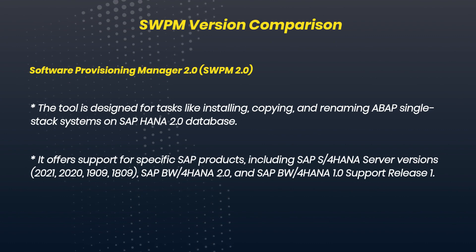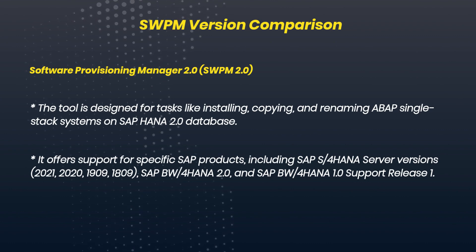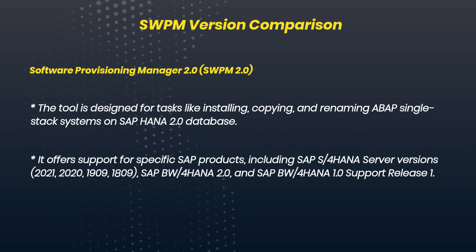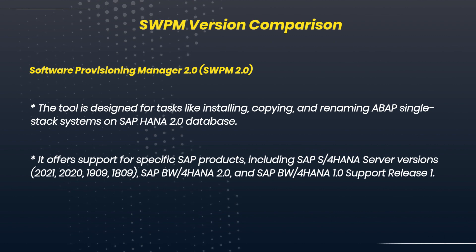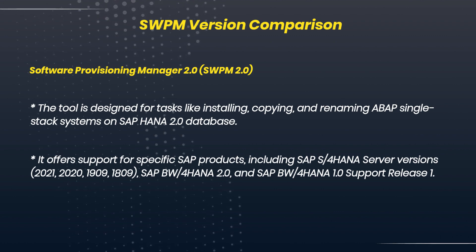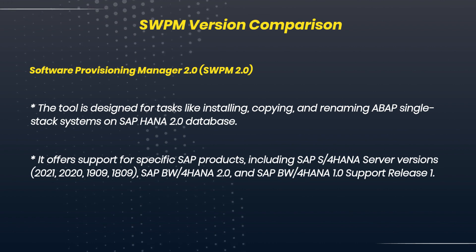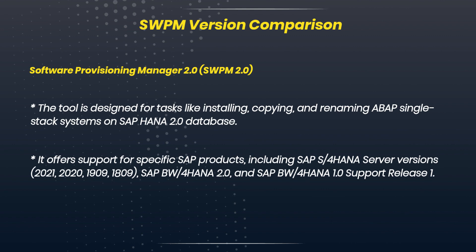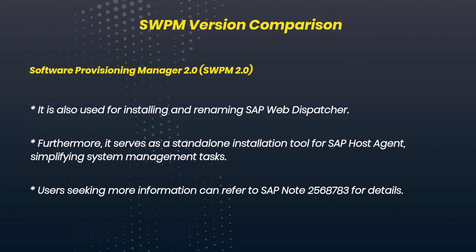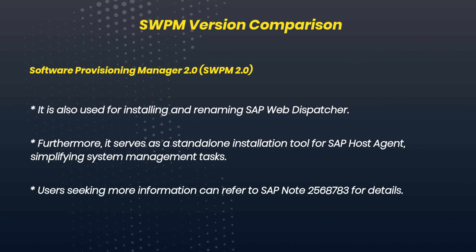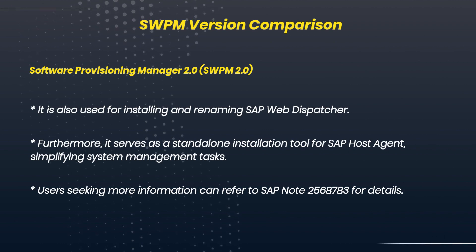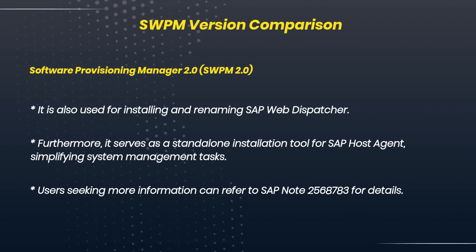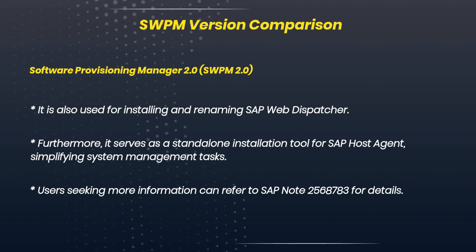Software Provisioning Manager 2.0 is designed for tasks like installing, copying, and renaming ABAP single-stack systems on SAP HANA 2.0 database. It offers support for specific SAP products, including SAP S/4HANA Server versions, SAP BW/4HANA 2.0, and SAP BW/4HANA 1.0 Support Release 1. It is also used for installing and renaming SAP Web Dispatcher. Furthermore, it serves as a standalone installation tool for SAP Host Agent, simplifying system management tasks. Users seeking more information can refer to SAP Note 2568783 for details.